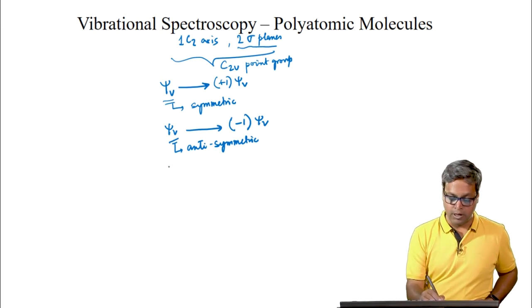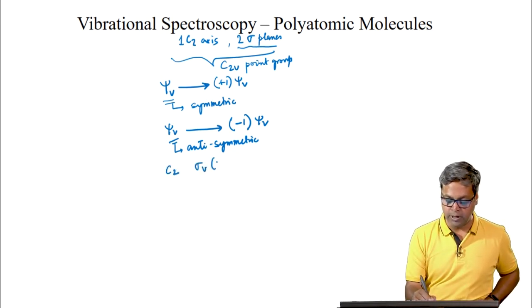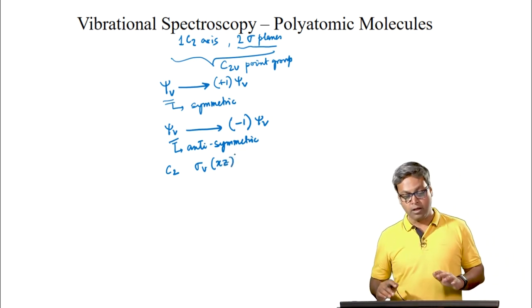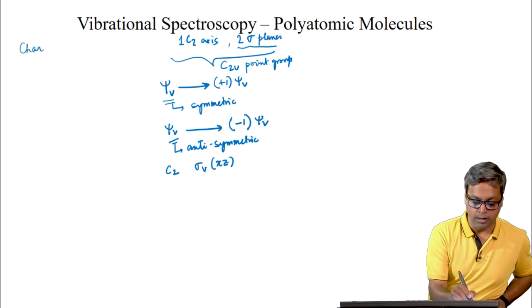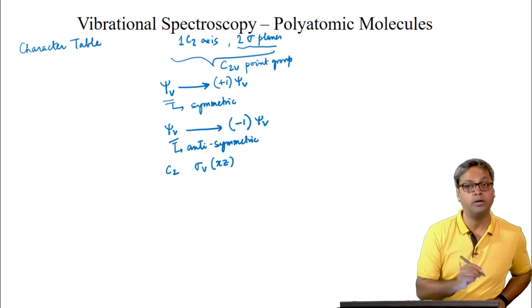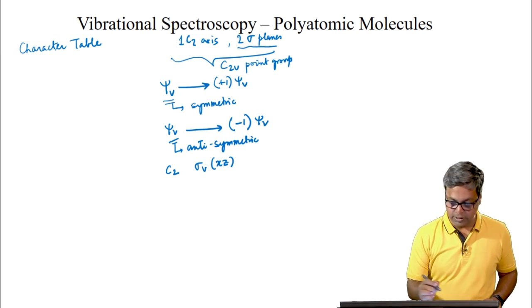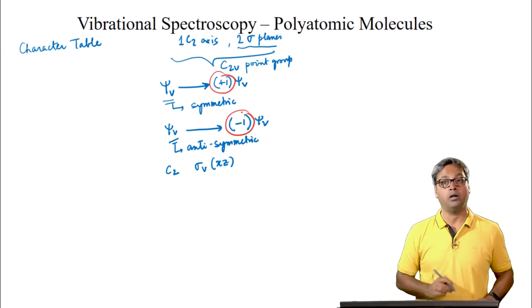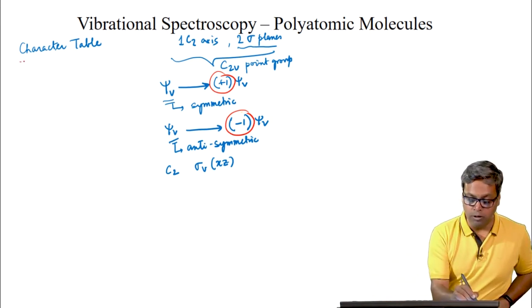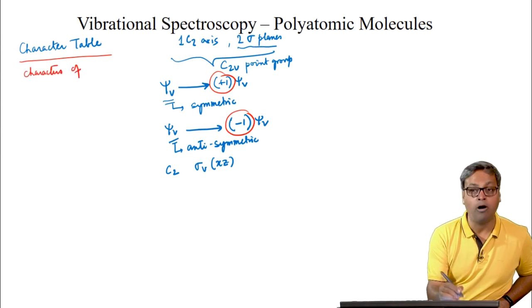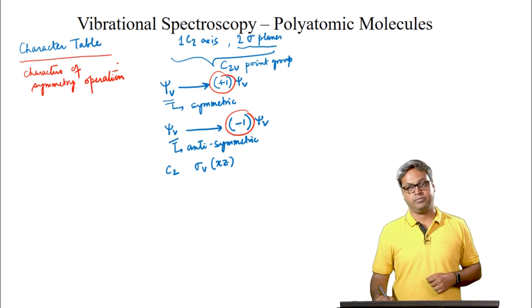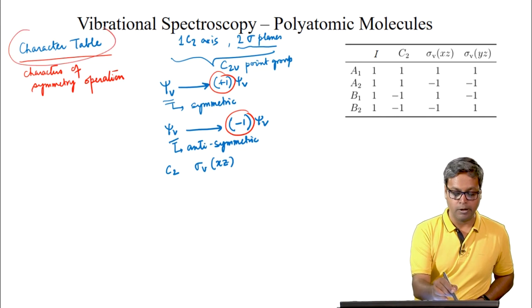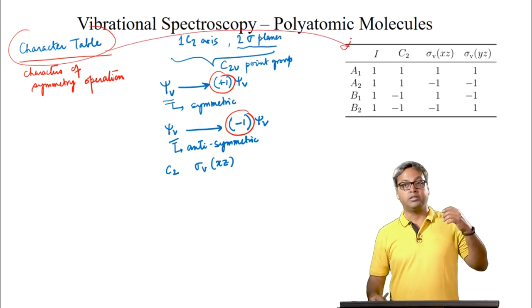For the water molecule, the C2 and the sigma_V(xz) operations have no effect on the wave function. We can create something known as the character table, where the elements — either +1 or -1 — of this character table are known as the characters of the symmetry operation with respect to the symmetry operation. Here we show the character table of water, or the C2V point group.